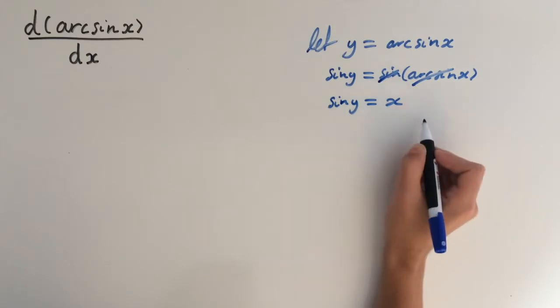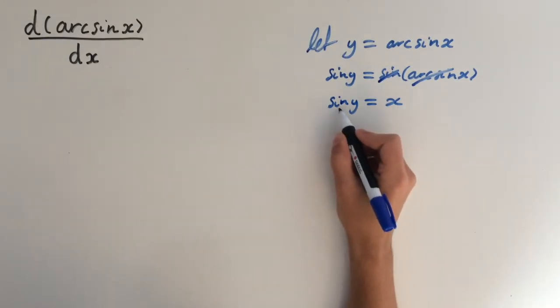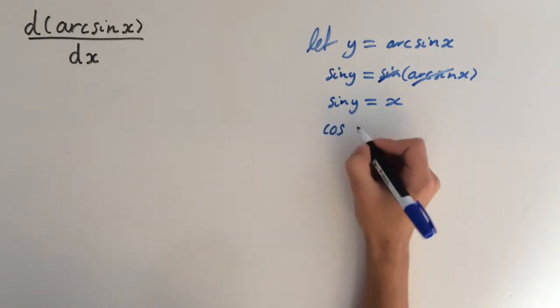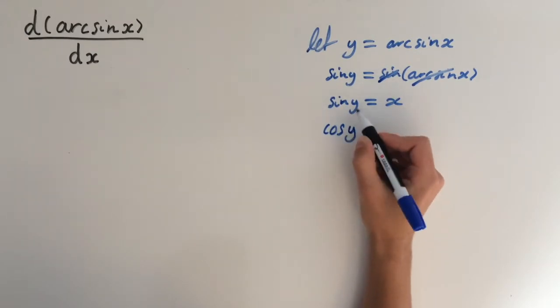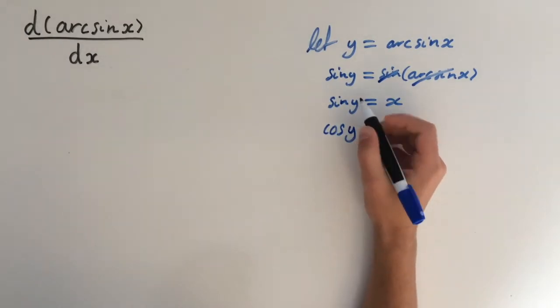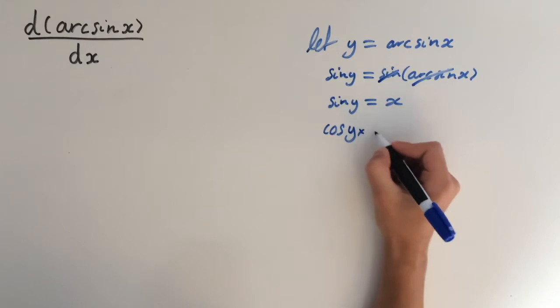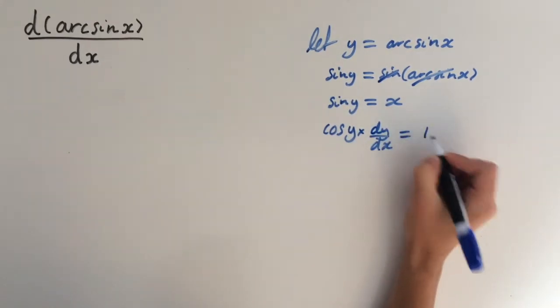And now we want to implicitly differentiate. So the derivative of sine is cosine, and this is y. And then we need to use a chain rule to differentiate y. So we're going to be left with dy/dx. And this equals 1.